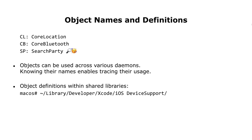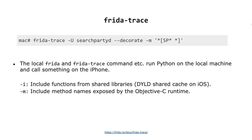Figuring out where an object is defined is sometimes a bit tricky since there are multiple places. For the first example, you don't even need to write code. After installing Frida on the jailbroken iPhone and your local machine — which can be macOS or Linux — you can run tools like Frida Trace. The parameter -u means you can run it on a remote USB device, --decorate will add library names, and -m allows tracing Objective-C function calls. Note that it is -m and not -i here, which accepts a different syntax.